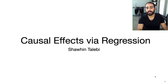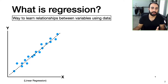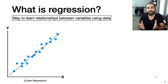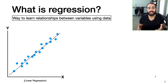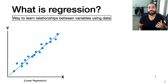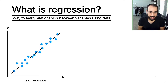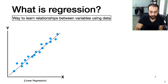The title of this talk is causal effects via regression, so we might ask ourselves: what is regression? Regression is very simple. It's a very widely used technique in science, business, and economics. Regression is simply a way to learn relationships between variables using data. One of the most popular regression techniques is linear regression, which you may have even seen back in high school.